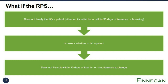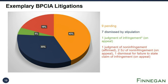Looking back to our nine exemplary biologics, they have been involved in 21 BIPCA litigations. Nine are still pending (shown in orange), and seven have been dismissed by stipulation (shown in blue). One BIPCA litigation has resulted in a judgment of infringement (shown in green)—though the court also issued a judgment of non-infringement as to another patent in the same suit, and these decisions are currently on appeal. As shown in red, there has been one judgment of non-infringement affirmed by the Federal Circuit, two summary judgments of non-infringement on appeal, and one dismissal for failure to state a claim, also on appeal.